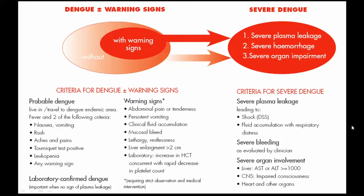Dengue with warning signs includes features of probable Dengue with: abdominal pain or tenderness, persistent vomiting, clinical fluid accumulation, mucosal bleed, lethargy, restlessness, liver enlargement more than 2 cm, and laboratory indicators such as increase in hematocrit concurrent with rapid decrease in platelet counts.